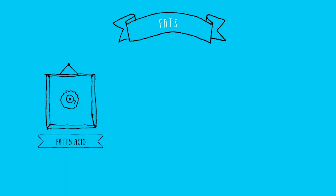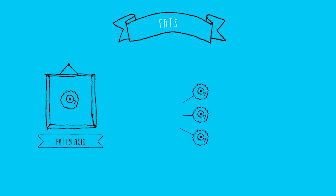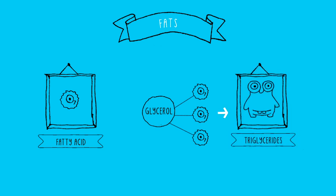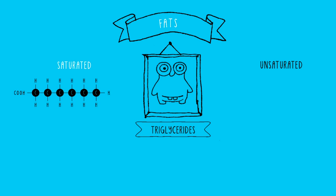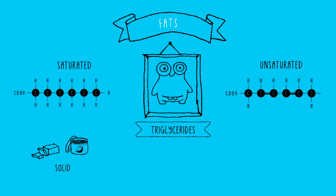Our second macronutrient is fat. The simplest form of fat is a fatty acid — just like carbohydrates have glucose monosaccharides, fat has fatty acids. Three fatty acids join together with glycerol to make triglycerides, which can also be formed by excess glucose in our blood. Fat comes in two major categories: saturated and unsaturated. Saturated fat means the entire carbon chain is saturated with hydrogen atoms. Due to the saturation, it's usually solid or semi-solid at room temperature — think butter, coconut oil, and cocoa butter. If the carbon chain has double bonds, it means it's not fully saturated, so it's considered unsaturated. Unsaturated fats are usually liquid at room temperature, like most vegetable oils.